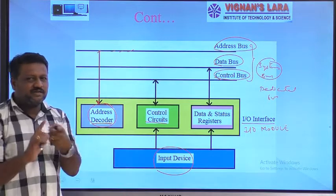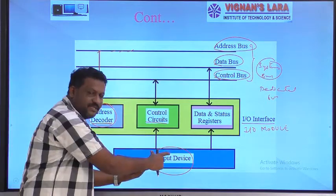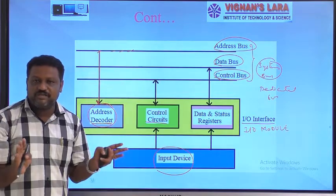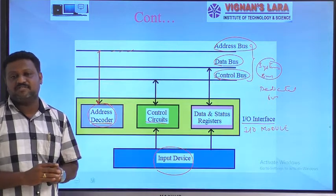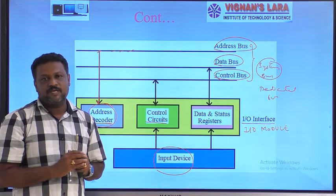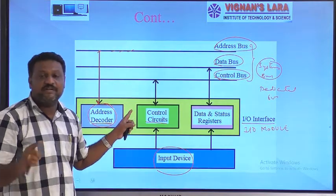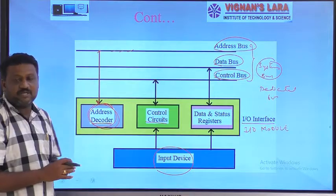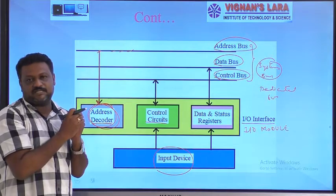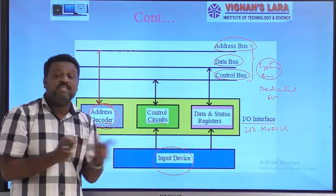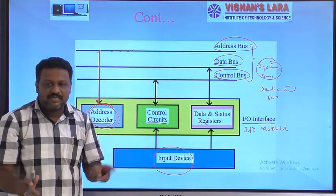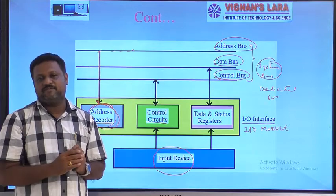The reason for decoding is that we may connect multiple I/O devices to a single I/O interface or I/O module. If only one I/O device is connected to an I/O interface, there is no need for the address decoder, since there is only one address. But when an address decoder is present, it means multiple I/O devices may be connected to that I/O module.